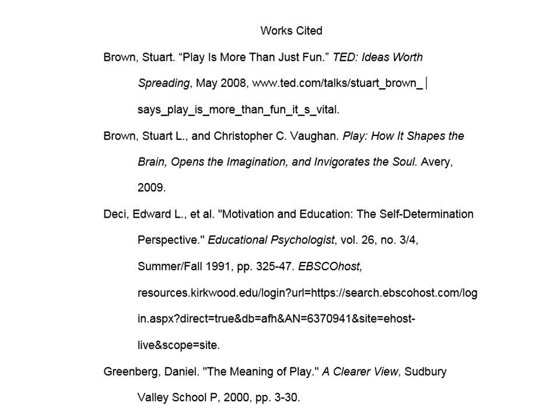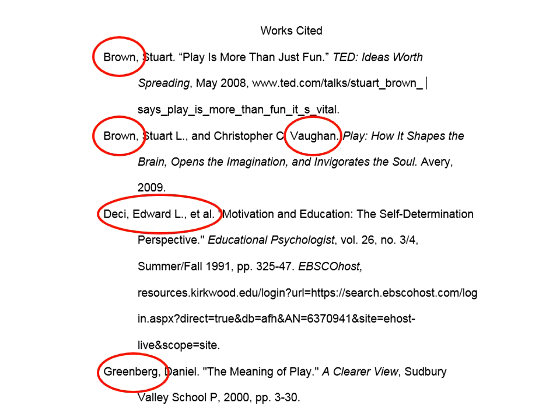Including the in-text citation in your writing is a simple process. It pulls information directly from the full citation on your Works Cited page, using the first word of your full citation as a shortened reference. The process will look something like this.